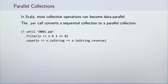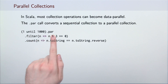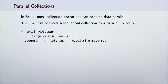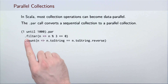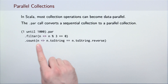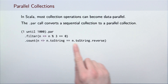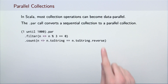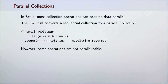In this example, we convert the range collection into a parallel range. We then filter the integers that are divisible by 3 and count the number of palindromes among those integers. However, some collection operations are not parallelizable.